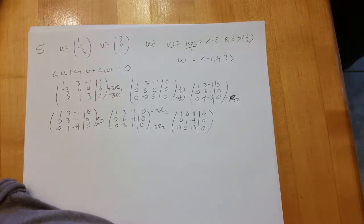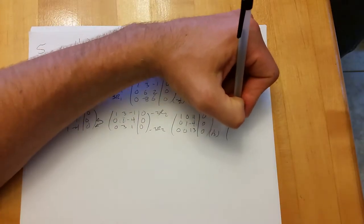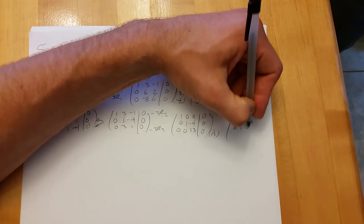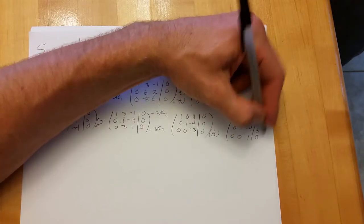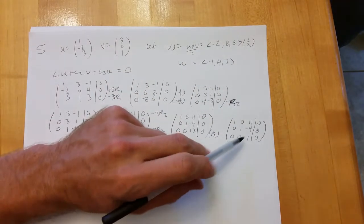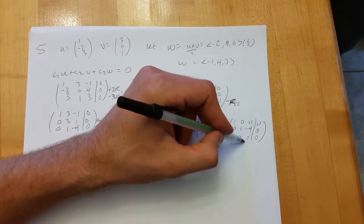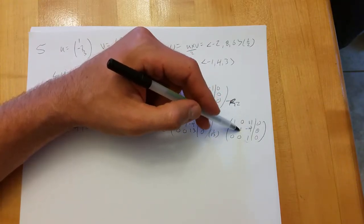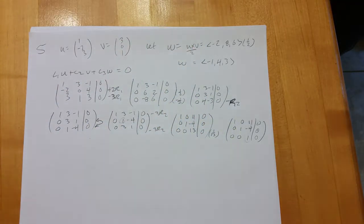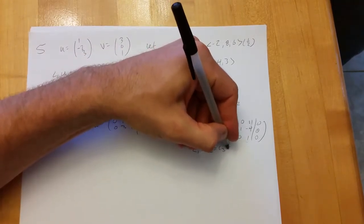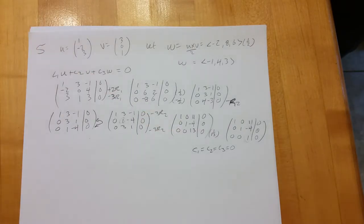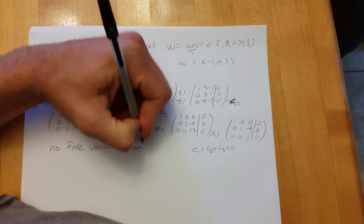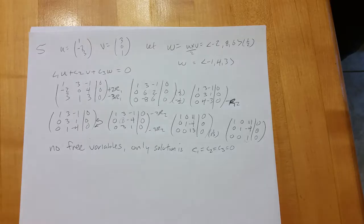I can stop here and go one-thirteenth. We have a pivot in every row — that means C equals zero, which is the trivial solution. There are no free variables. So this system only has the trivial solution, which means the set is linearly independent.